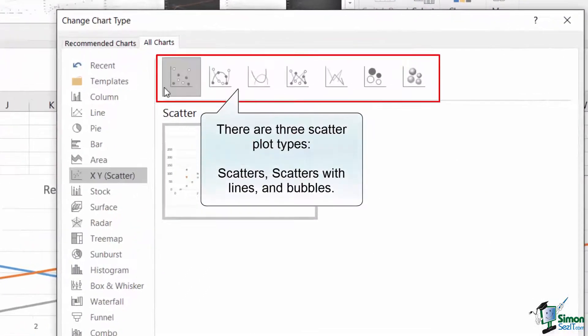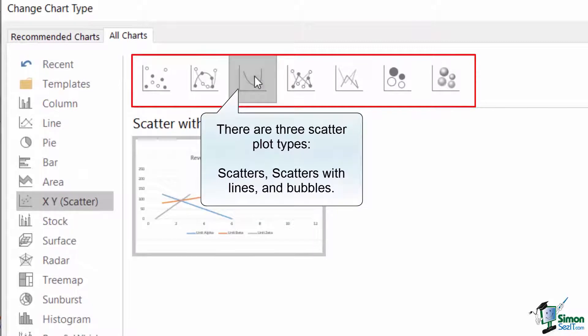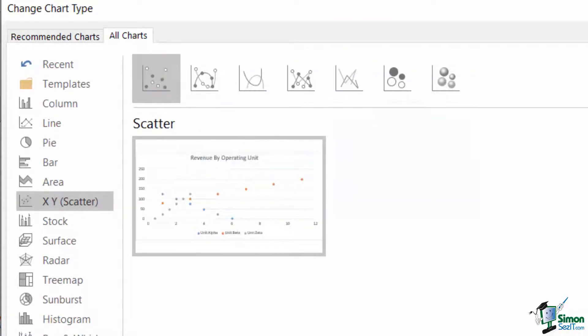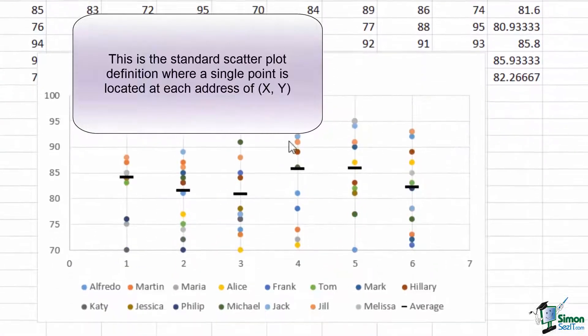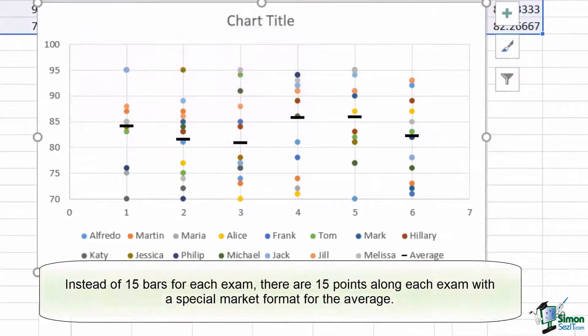There are three basic types: the simple points, the connected points, and the bubble plots. A simple scatter plot looks like this, where each value from a dataset is laid out on a chart. Where a bar plot gets really messy with dozens of bars, a scatter plot can easily display the same type of information by comparing individual points along a line.